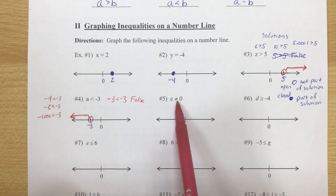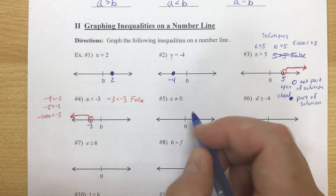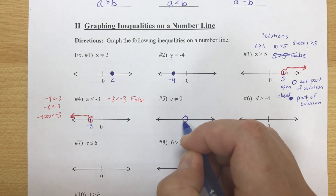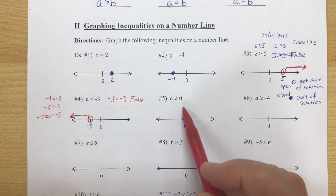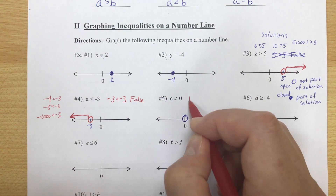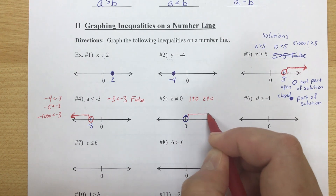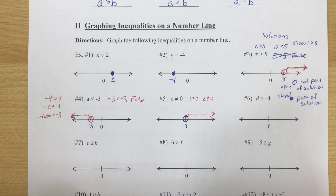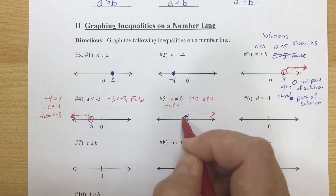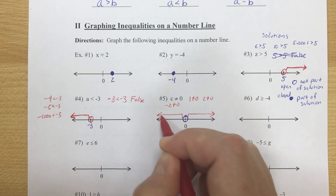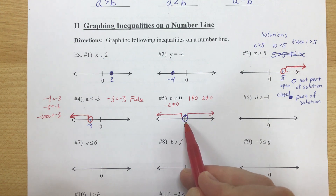Number 5: c is not equal to 0. Zero is already on the number line. 'Not equal to' uses an open circle at 0. What values are not equal to 0? Positive numbers like 1 and 2, and also negative numbers like negative 2 and negative 5. So basically the whole number line gets shaded except for 0 itself, with arrows going both directions.